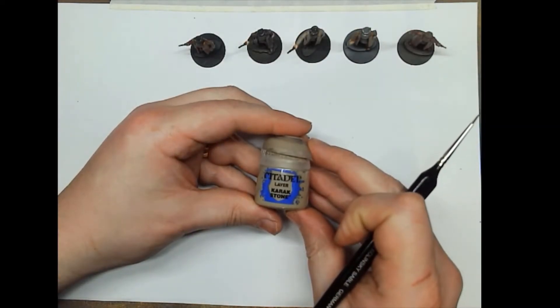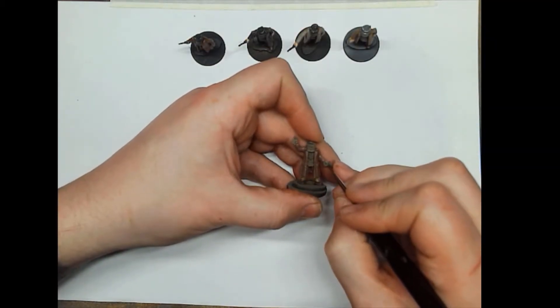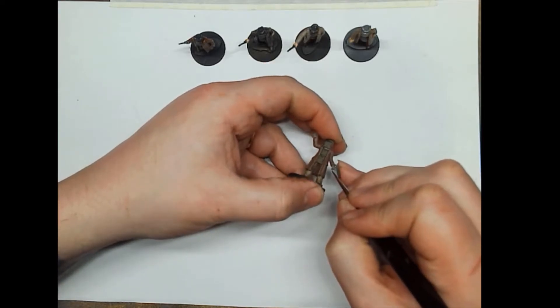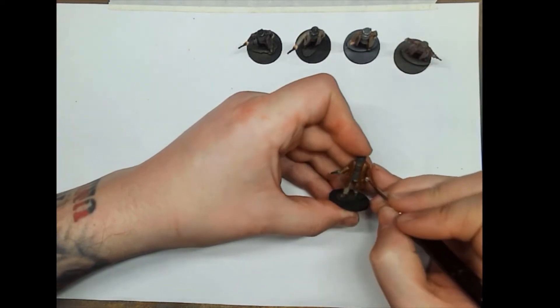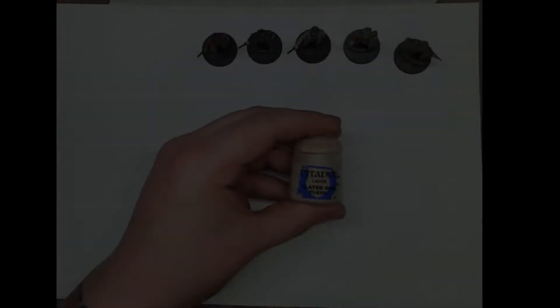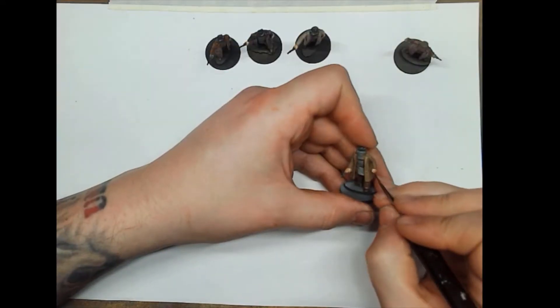Next up is Karak Stone. I'm going to use that to highlight the Bane Blade Brown on the gloves that we just painted. And Ungor Flesh as a highlight for the Kislev Flesh on the hands.